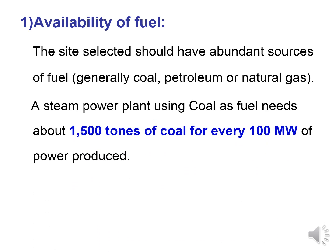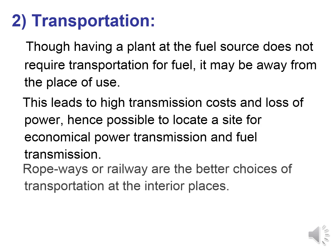Fuel availability should be large. A steam power plant using coal as a fuel needs about 1500 tons of coal for every 100 megawatt of power produced. So for 200 megawatt, we require 3000 tons of coal. Generally we can use coal, petroleum, or natural gas as fuel. This availability must be met for production of steam power.